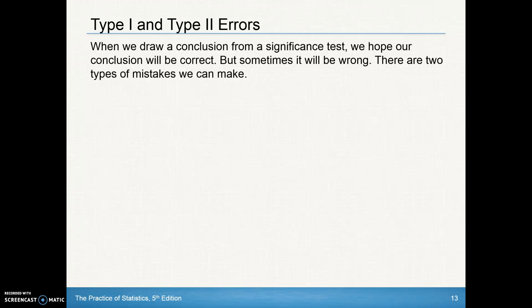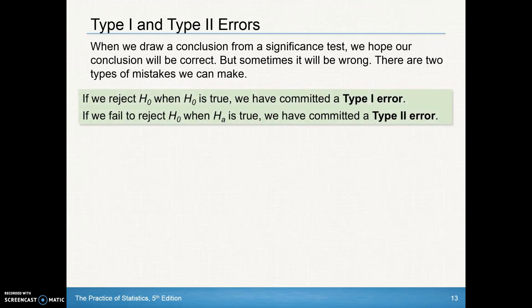There are two types of mistakes that we can make. If we reject the null hypothesis when the null is really true, we have committed a type 1 error.